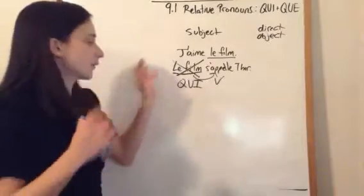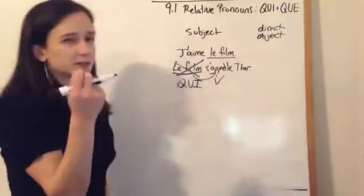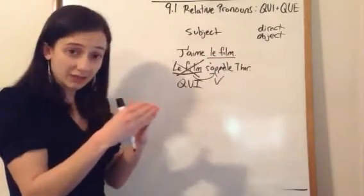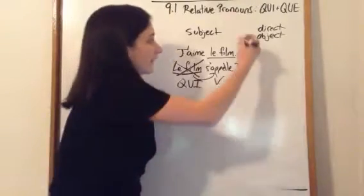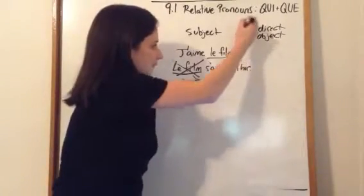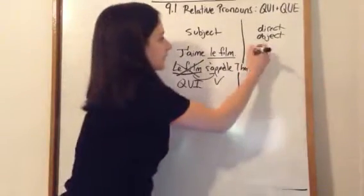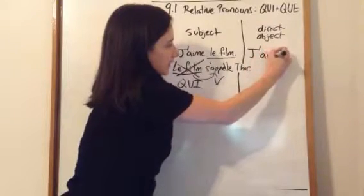All right. Let's move on to our direct object. So, direct object, if you remember, it's the thing that is receiving the action, directly receiving the action of the verb. So, let's use our same example here. I'm just going to divide, make a dividing line.